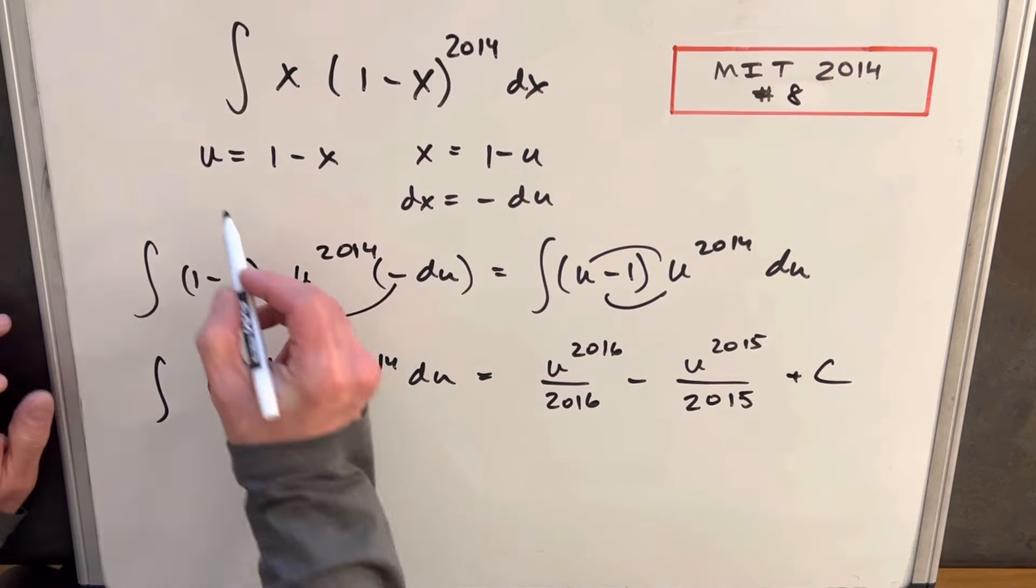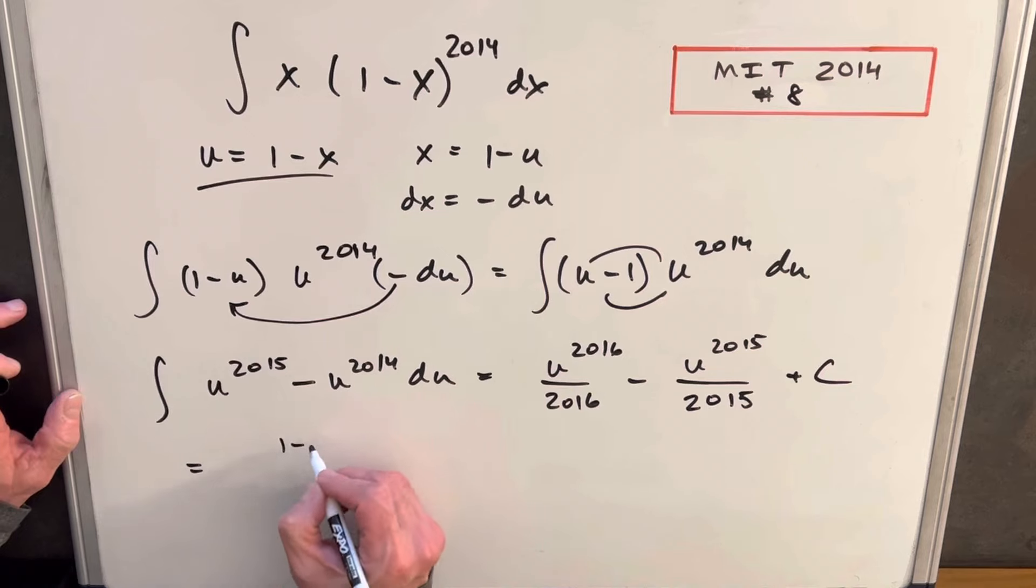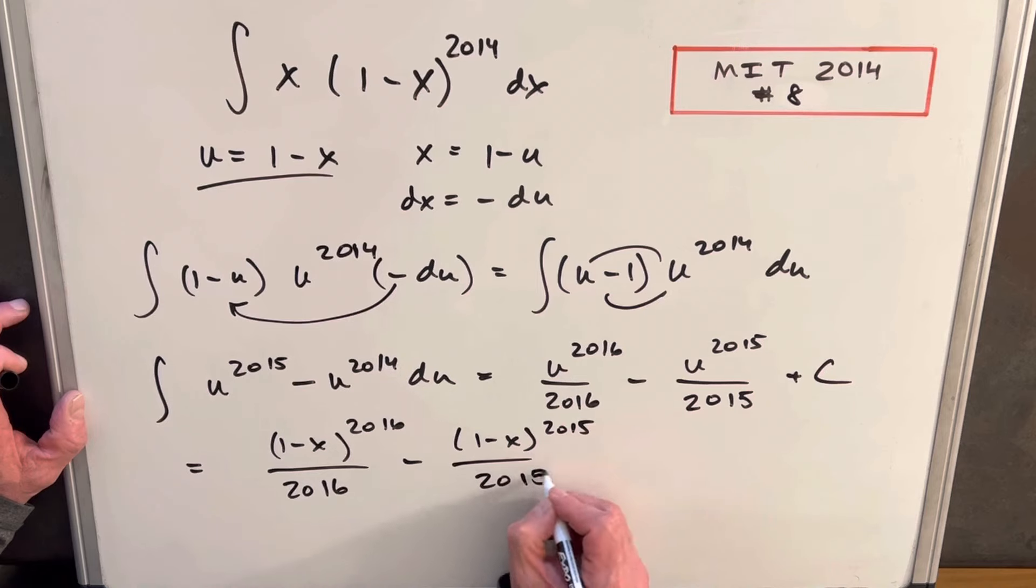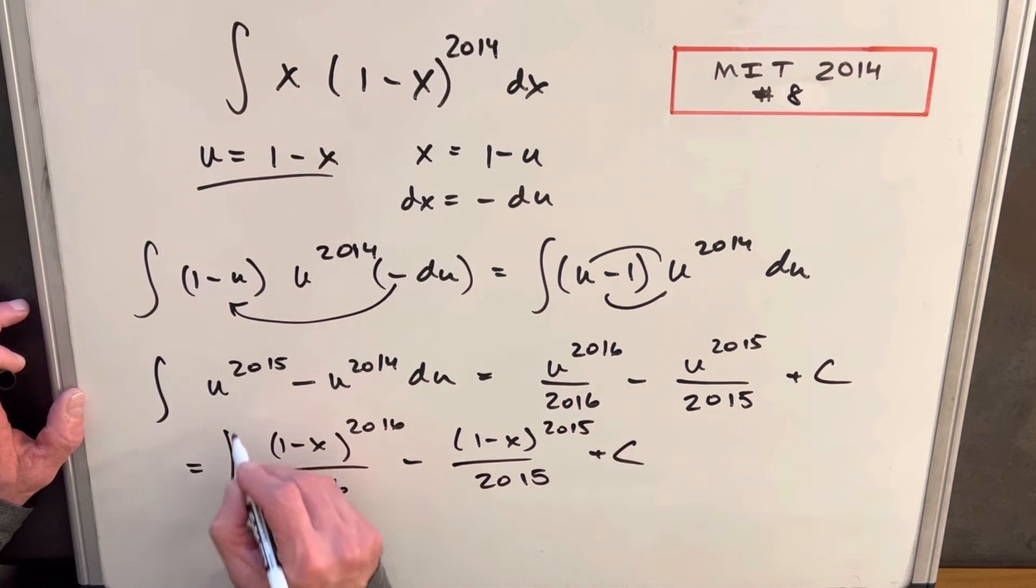Then we can just back substitute, we have our u value right here. So our final answer is going to be (1 minus x) to the 2016 over 2016 minus (1 minus x) to the 2015 over 2015 plus c. And that's it, we're done.